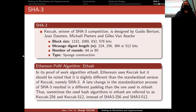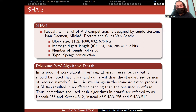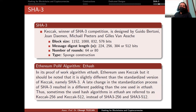Keccak is used in Ethereum's proof-of-work algorithm, Ethash. However, Ethereum uses a slightly different version than the standardized SHA-3: a late change in the SHA-3 standardization process resulted in a different padding than the one used in Ethash. Thus, the hash algorithms in Ethash are sometimes referred to as Keccak-256 and Keccak-512, rather than SHA3-256 or SHA3-512.